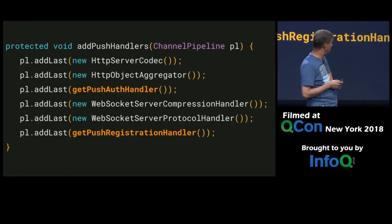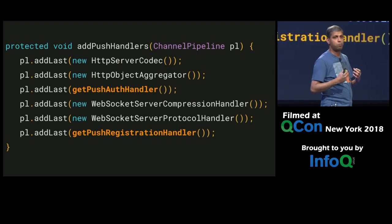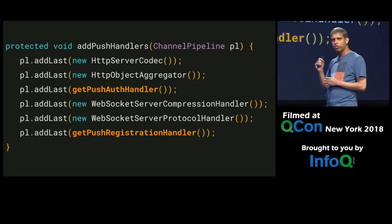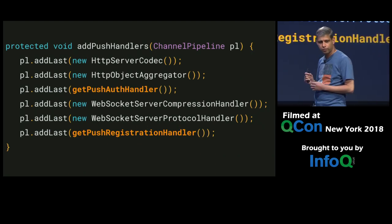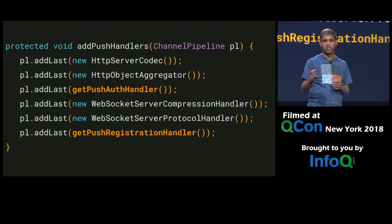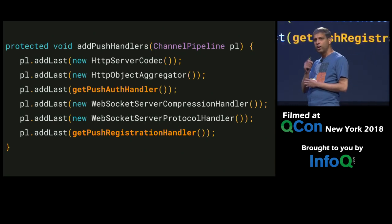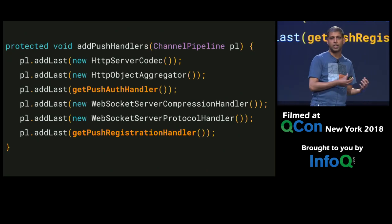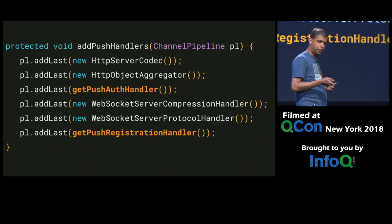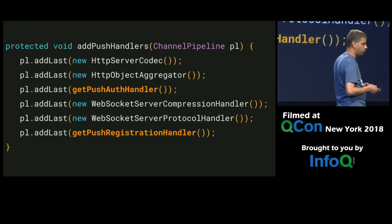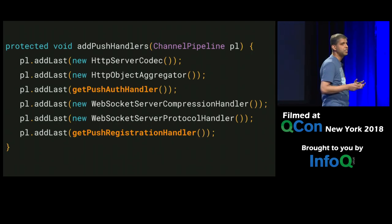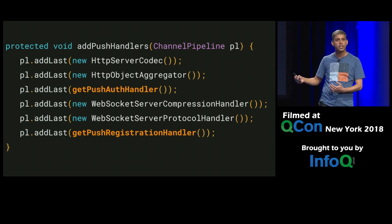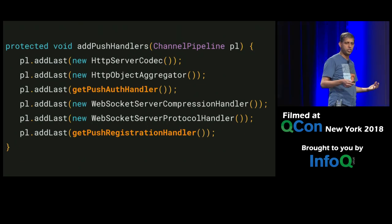This is our simplified depiction of how a push Netty pipeline looks like. There are a lot of things going on here, but I really want to draw your attention to just two of the highlighted methods: get push auth handler and get push registration handler. You can override these methods to plug in your own custom authentication and push registration mechanism inside Zulpush. The rest, like HTTP server codec and WebSocket server protocol handler, are standard protocol parsers provided by Netty out of the box, which means Netty is doing most of the heavy lifting, like parsing low-level HTTP and WebSocket protocols.